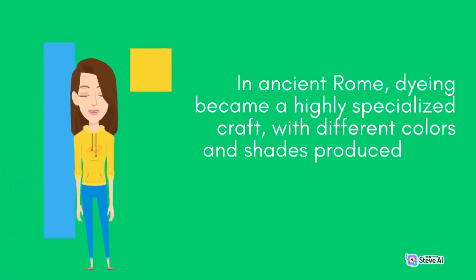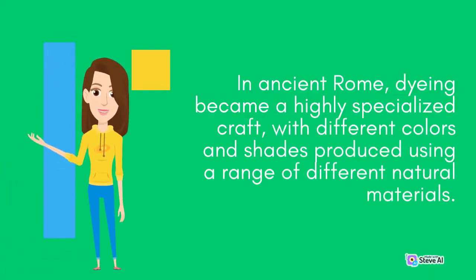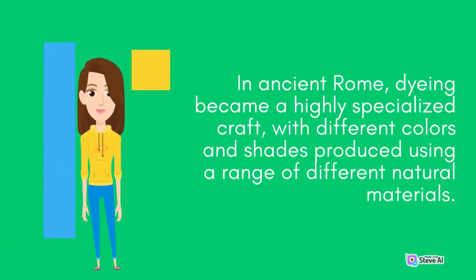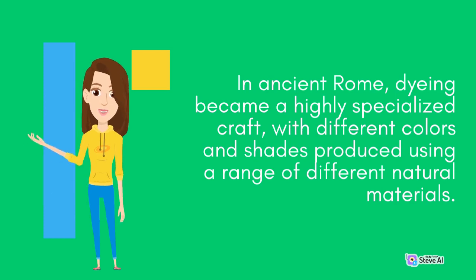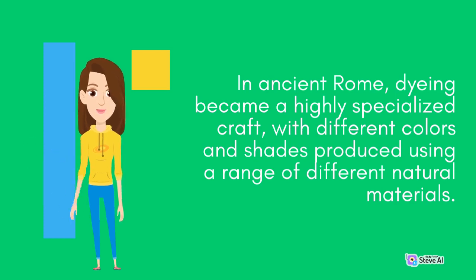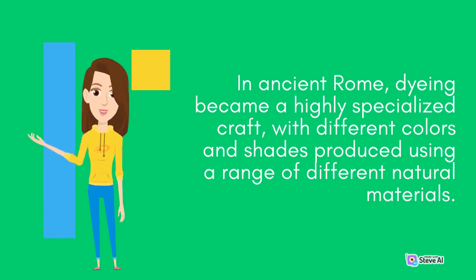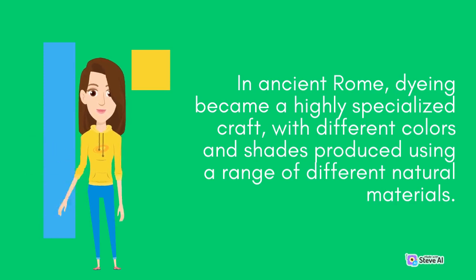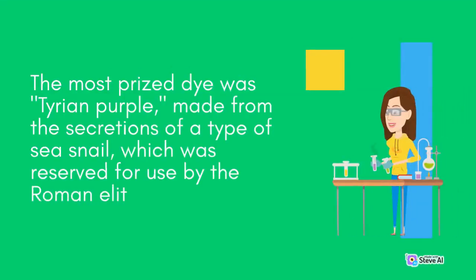In ancient Rome, dyeing became a highly specialized craft, with different colors and shades produced using a range of natural materials. The most prized dye was Tyrian purple, made from the secretions of a type of sea snail, which was reserved for use by the Roman elite.